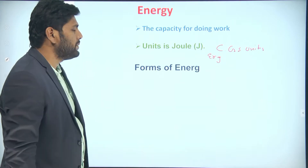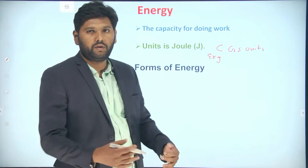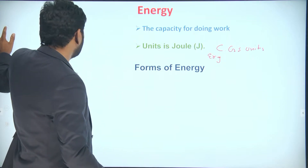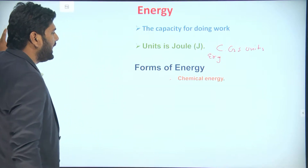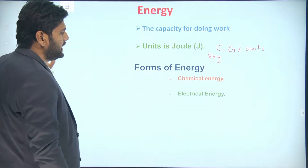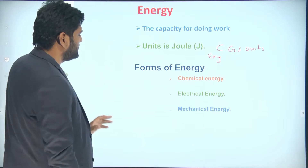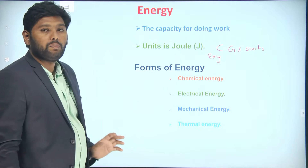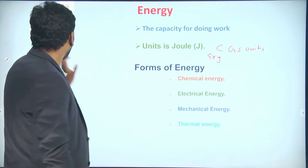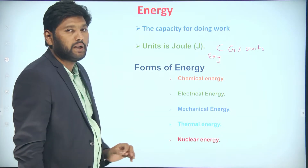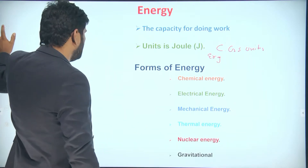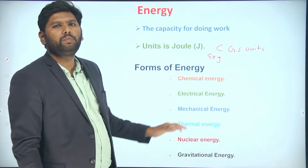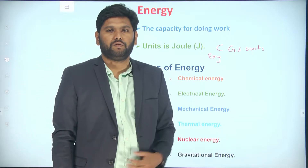The next is forms of energy — we have different forms of energy. The first one is chemical energy, the second one is electrical energy, the third one is mechanical energy, the fourth one is thermal energy, the fifth one is nuclear energy, and one more — gravitational energy. These are some important forms of energy.